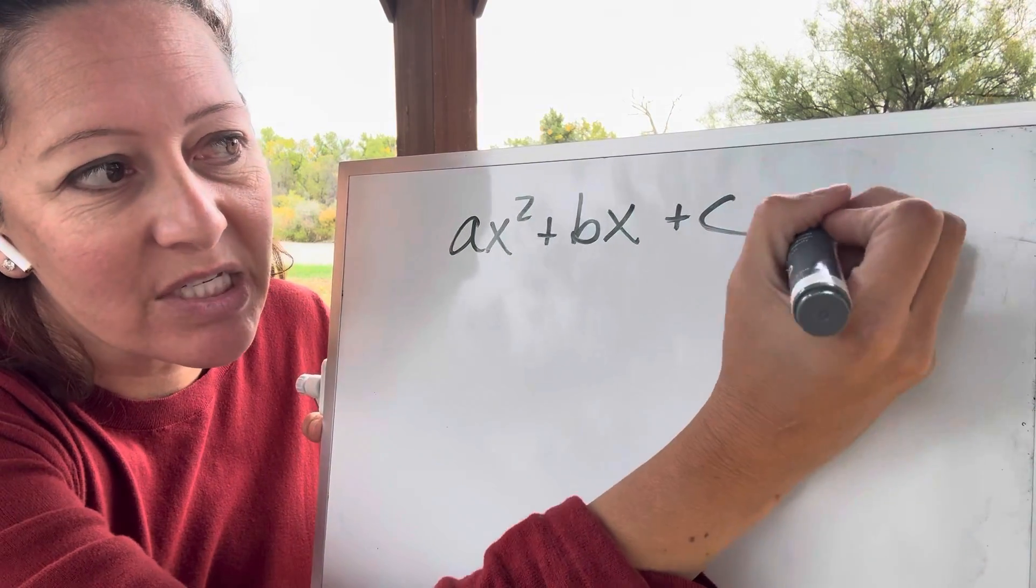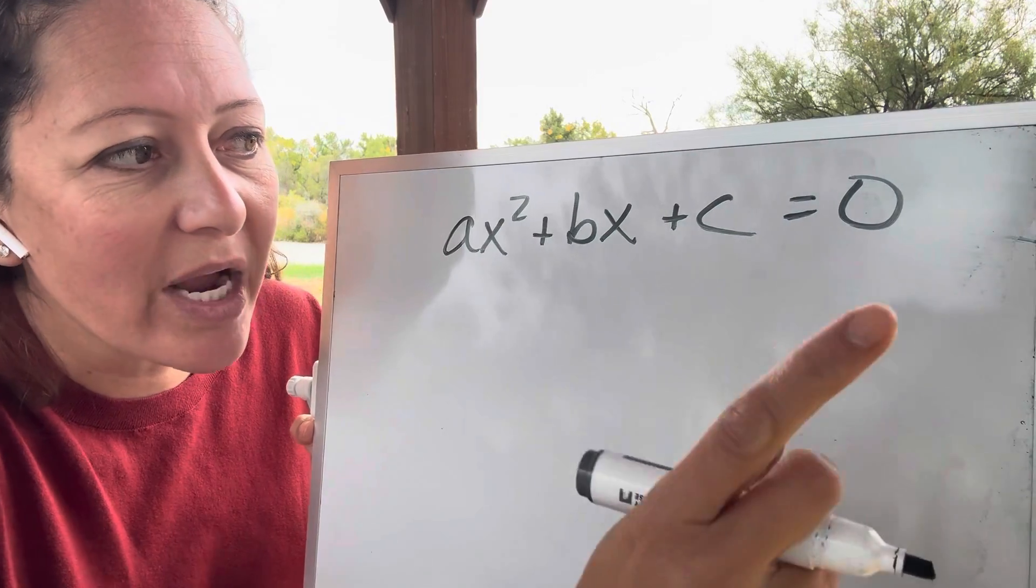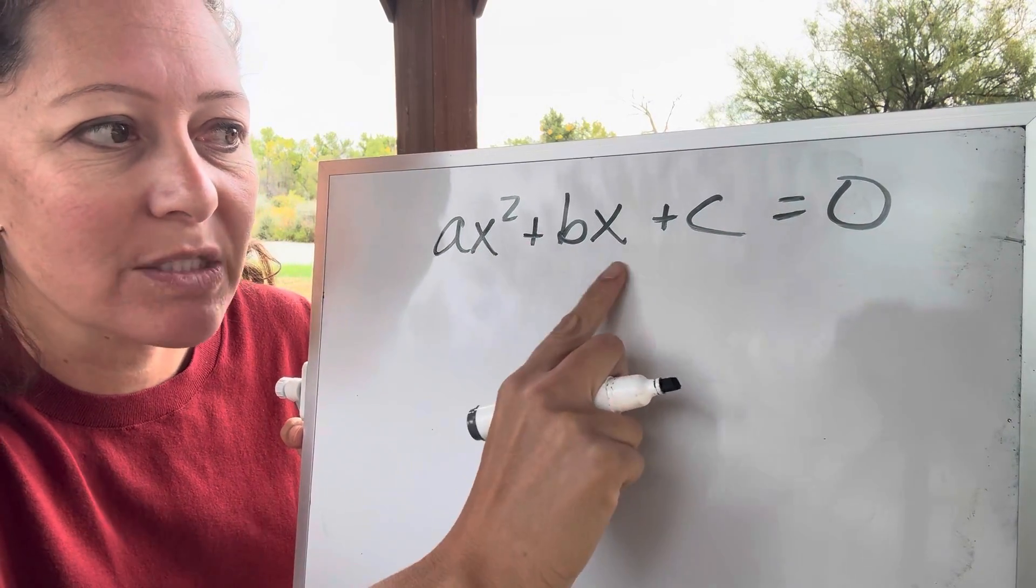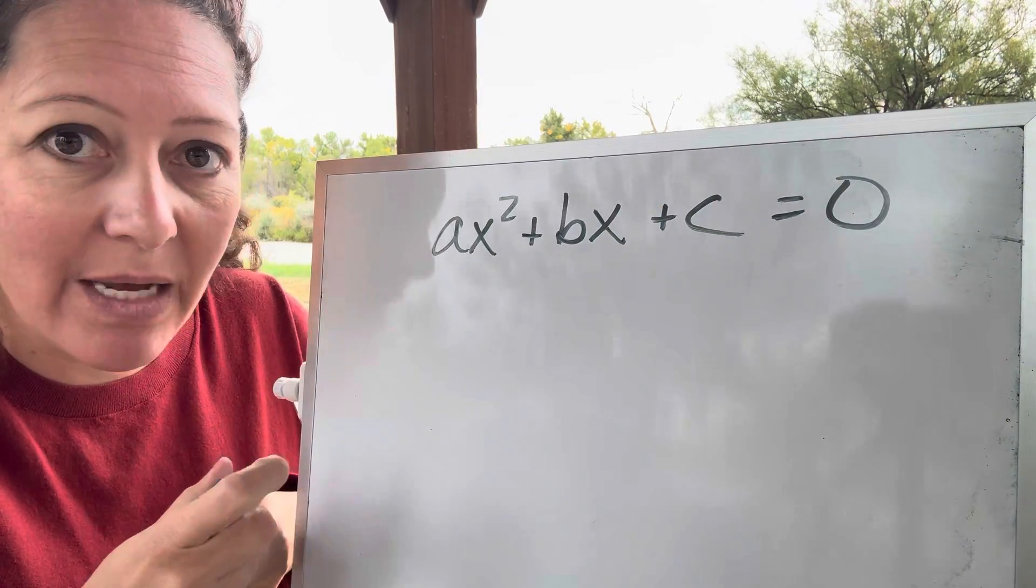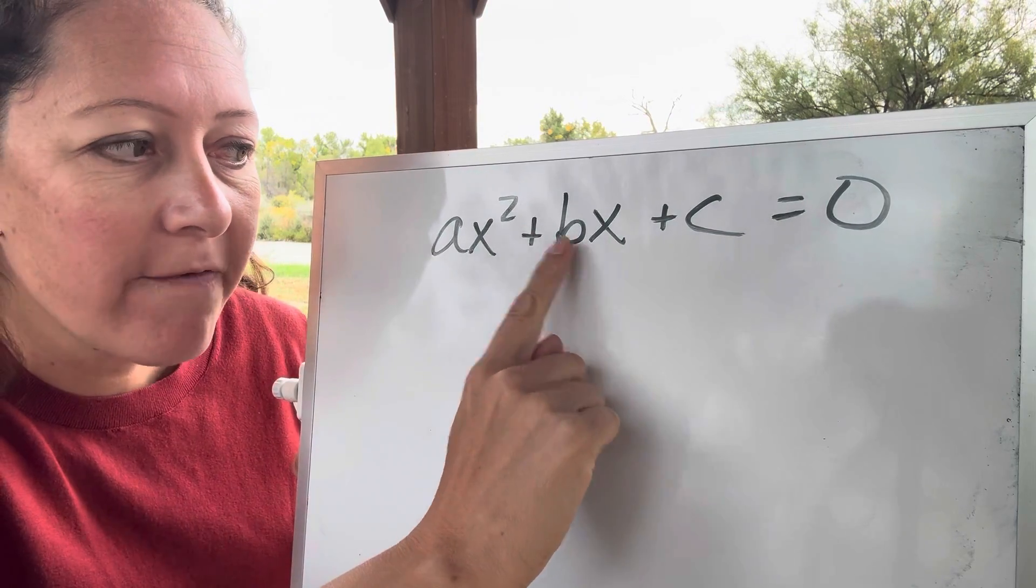Okay. So they have the, this is pretty much the standard form for the quadratic equation, right? You might remember this from math. ax squared plus bx plus c.